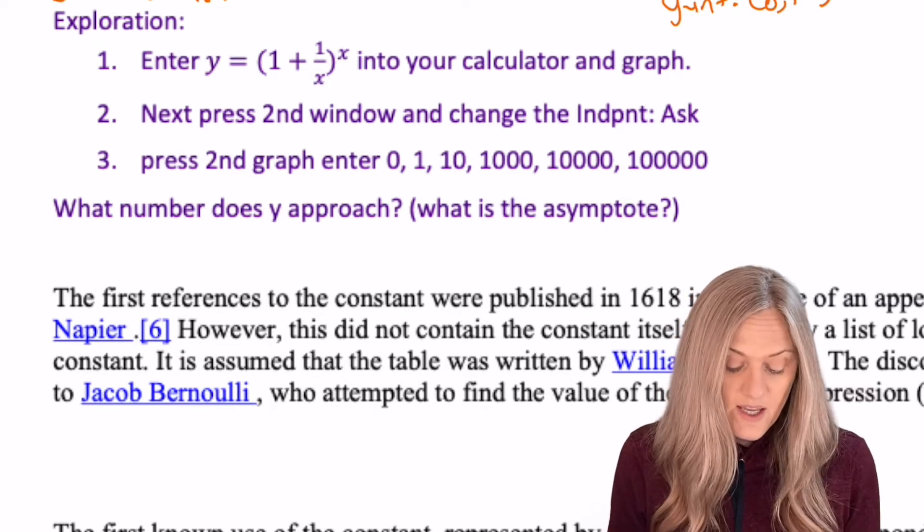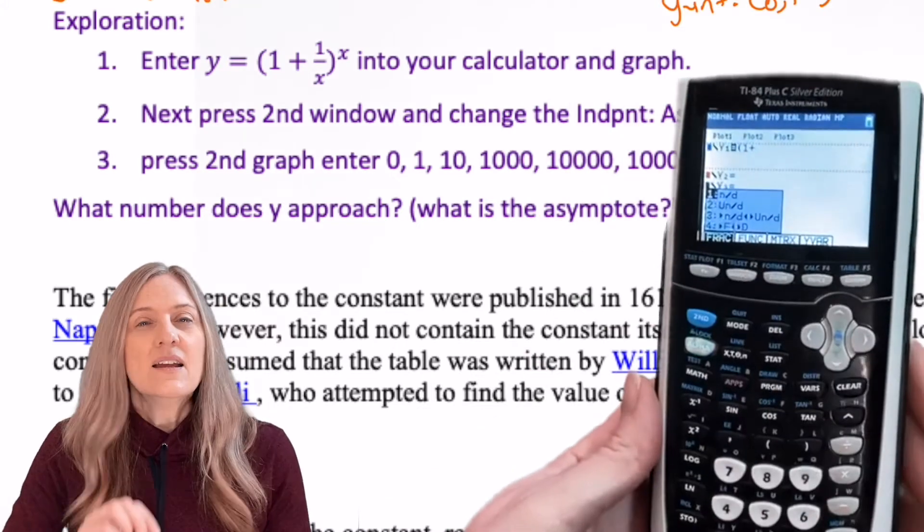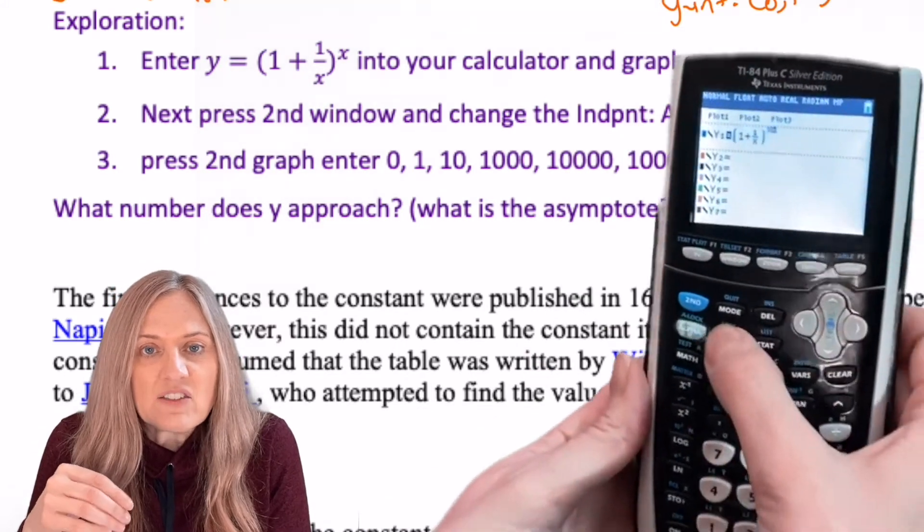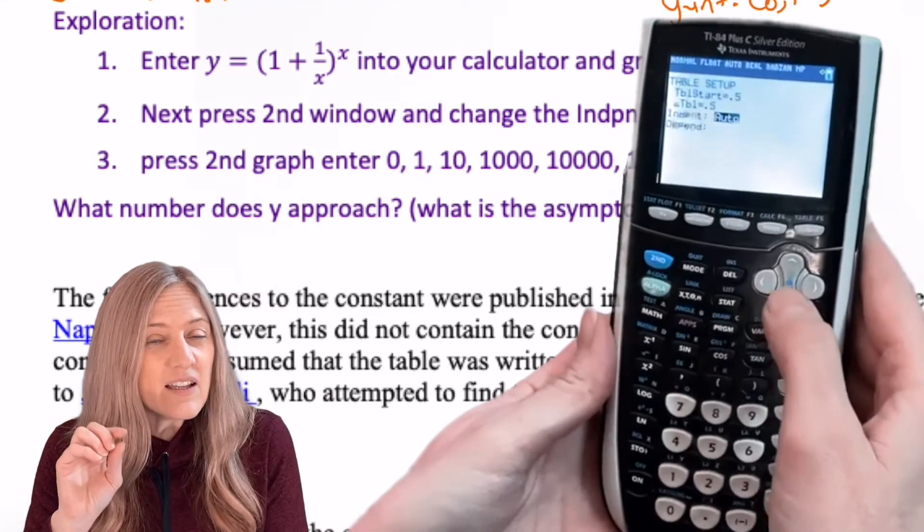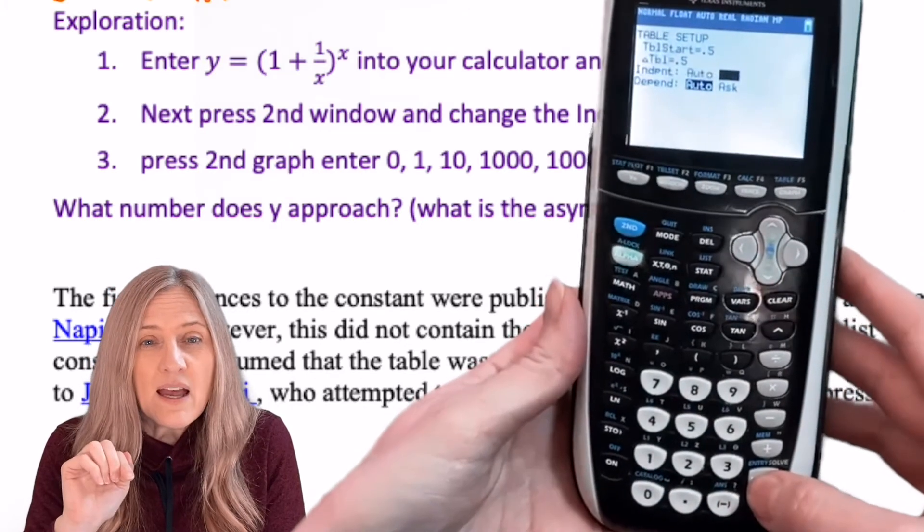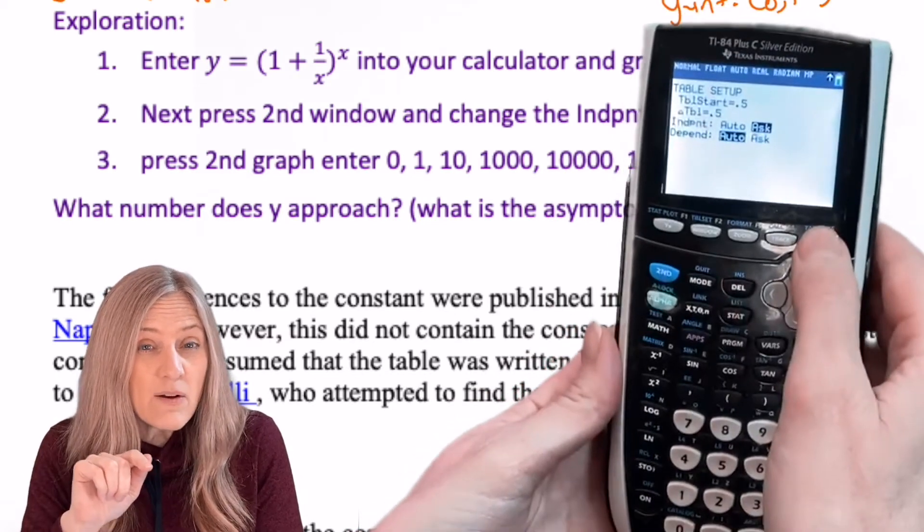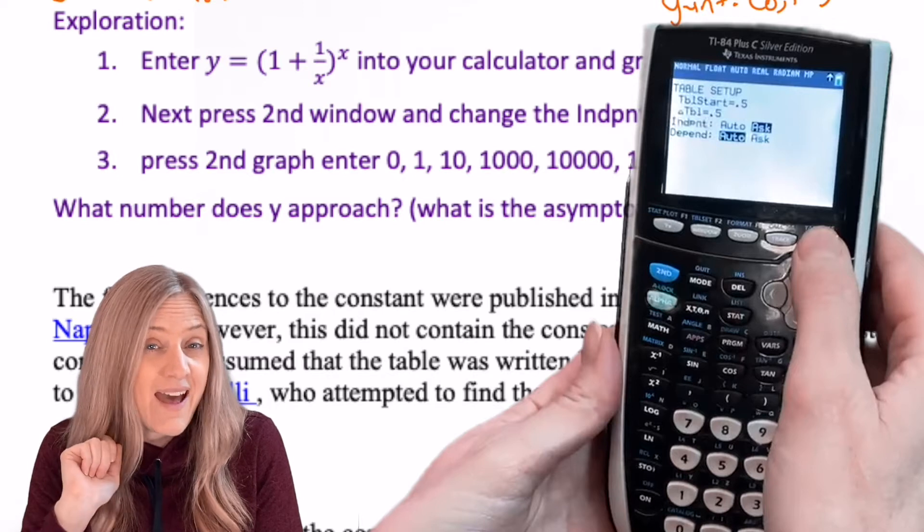So first, in the y equals menu, let's type that function in. Next, we're going to ask it to evaluate different values of x. So I'm going to hit the second button and then window. That gets me to table set right above it. There, I'm going to arrow down and make the independent variable on ask. So you have to use the arrows, arrow over, and then hit enter so that it's on ask.